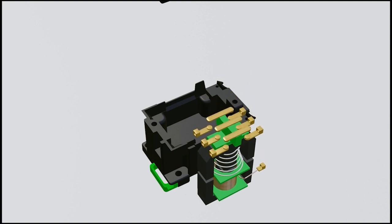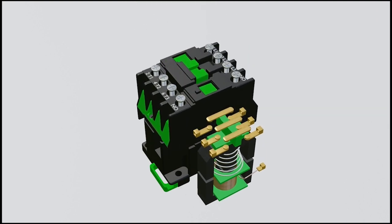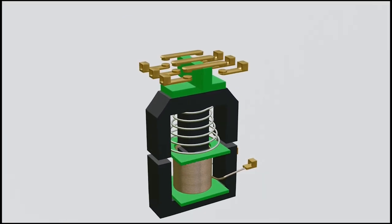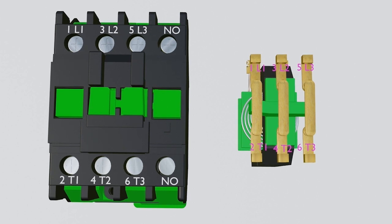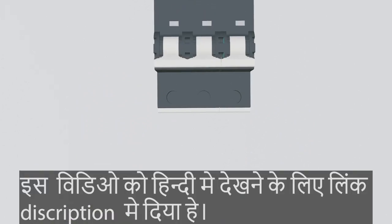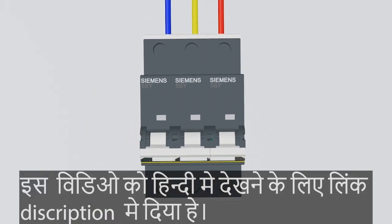First of all, L1, L2, and L3 are line connections where input supply comes and is connected there. During normal condition, the input supply will come from MCB, SFU, or isolator, which is in on condition, so supply comes out from MCB and comes to the contactor contact.